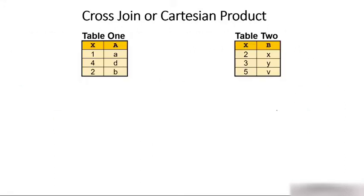Here we have two tables. Table 1 has two columns: X and A. Table 2 also has two columns: X and B. Table 1 has three rows and Table 2 also has three rows. Cross-join will make a combination of its first row with all the rows of the second table. Then it will pick the second row and combine it with all the rows of the second table.